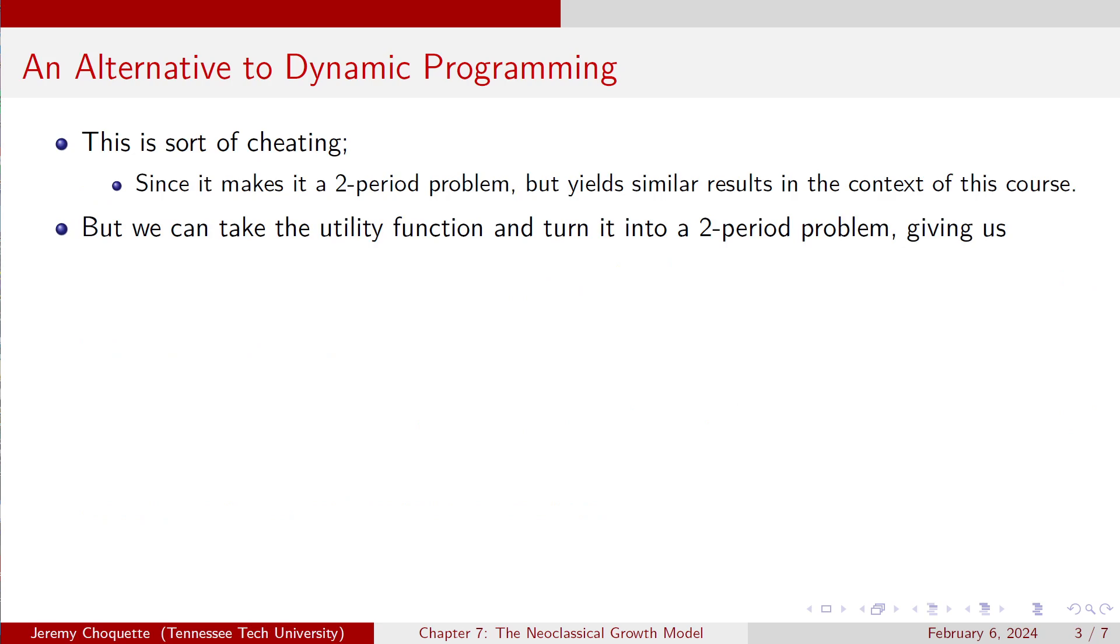Well, this is kind of cheating, sort of, because it makes it a two-period problem, but it has similar results in the context of this course. So you can take the utility function and turn it into a two-period problem, and if you do that, it gives us u of ct and ct plus 1 equals the natural log of ct plus beta times the natural log of ct plus 1. So, okay, that's not too bad. Really, that doesn't look that different from the Bellman equation, does it? Not really.